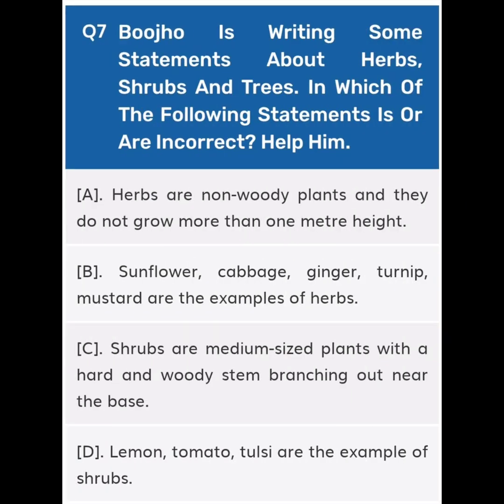Next, question number seven: Bojo is writing some statements about herbs, shrubs and trees. Which of the following statements is or are incorrect? Help him. Option A: Herbs are non-woody plants and they do not grow more than one meter in height. Option B: Sunflower, cabbage, ginger, turnip, mustard are examples of herbs. Option C: Shrubs are medium-sized plants with a hard and woody stem branching out near the base.